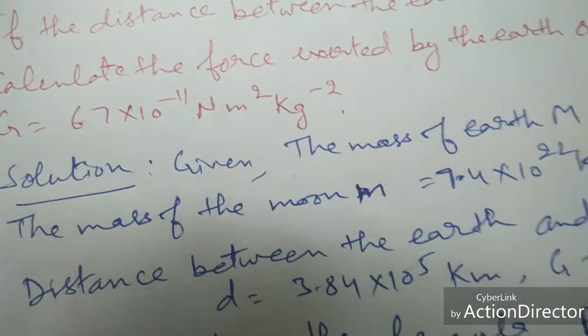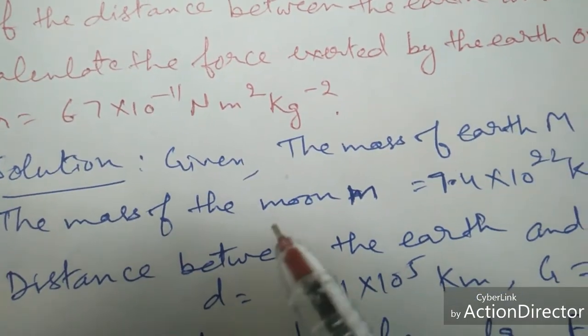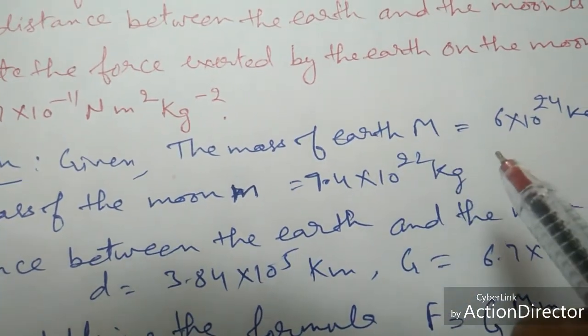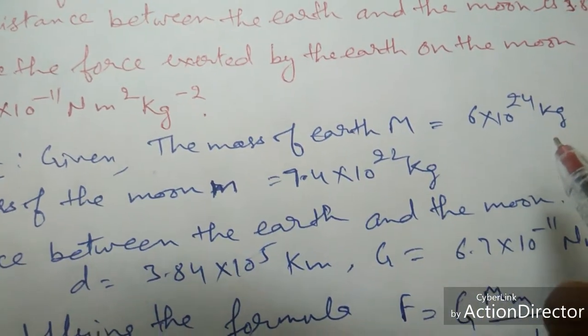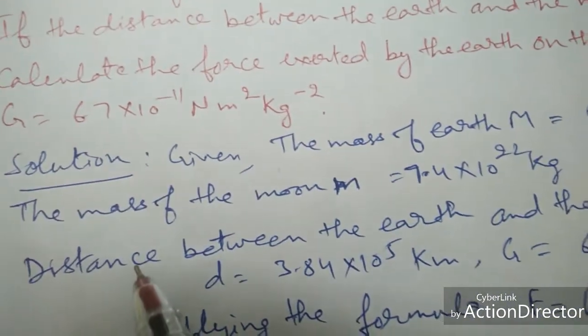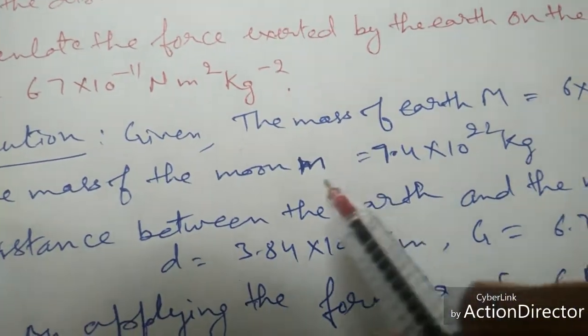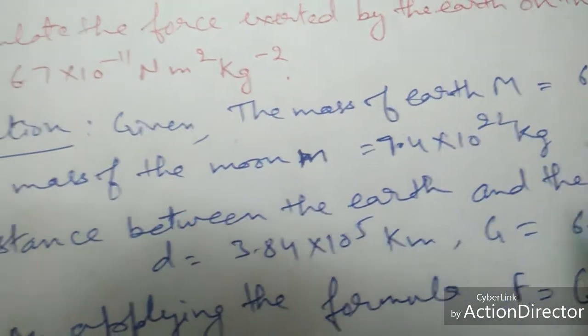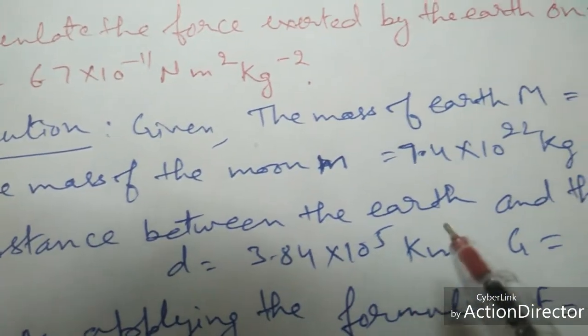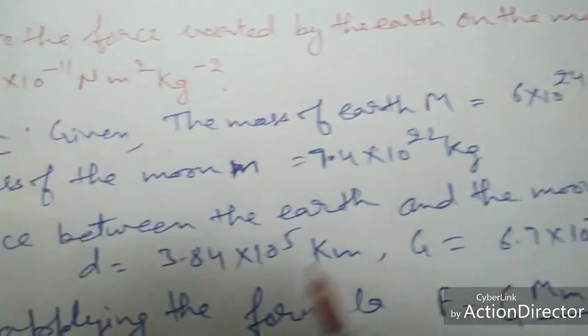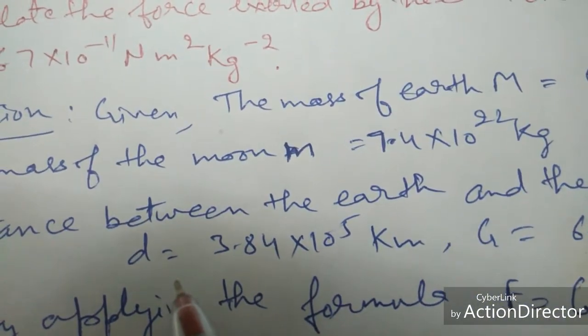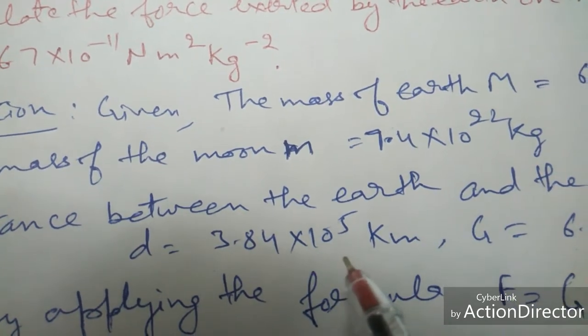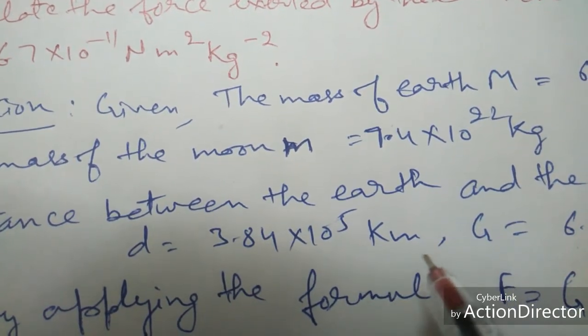Coming to the solution, we have been given that mass of the Earth, capital M, is 6 × 10²⁴ kg. The mass of the Moon, small m, is equal to 7.4 × 10²² kg. The distance between Earth and the Moon, small d, is equal to 3.84 × 10⁵ km.